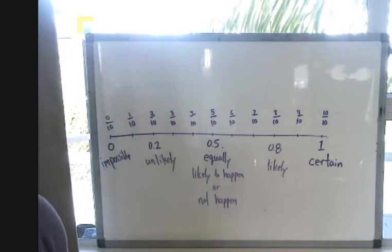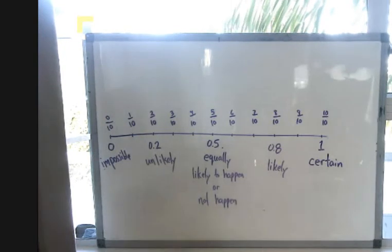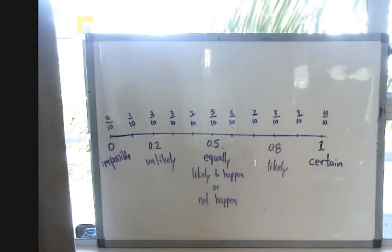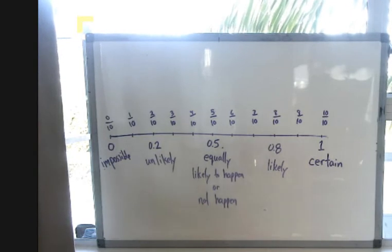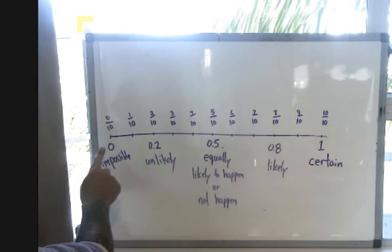Kia ora koutou katoa. Here we're going to build on our understanding of probability by discussing how probability is a number between zero and one.